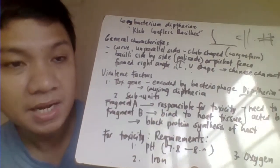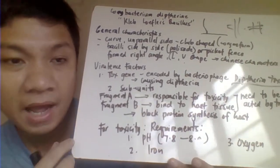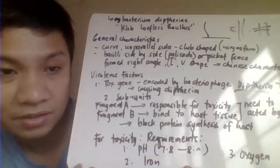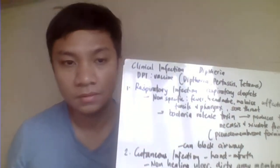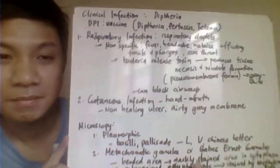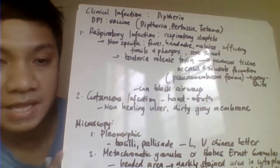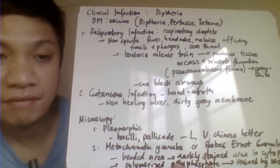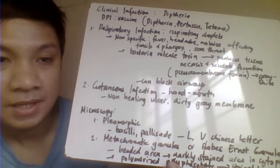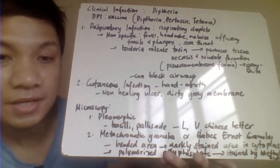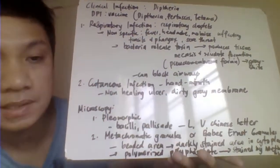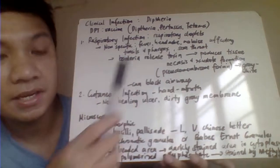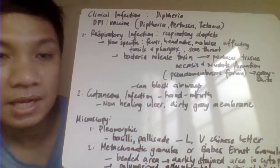Not all Corynebacterium diphtheriae cause diphtheria — only those infected by the tox gene from the bacteriophage. For clinical disease, Corynebacterium diphtheriae causes diphtheria. We have a vaccine for prevention — the DPT vaccine, a tri-vaccine primarily for prevention of diphtheria, pertussis, and tetanus — targeting Corynebacterium diphtheriae, Bordetella pertussis, and Clostridium tetanus.